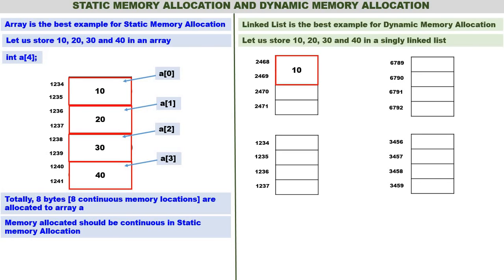Now let us store the values: 10 is stored at 2468, 20 is stored at 1234, 30 is stored at 6789, and 40 is stored at 3456. These four numbers are not physically adjacent — they are stored in different parts of the memory.